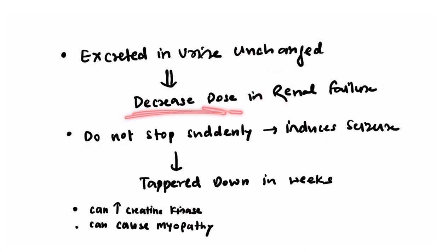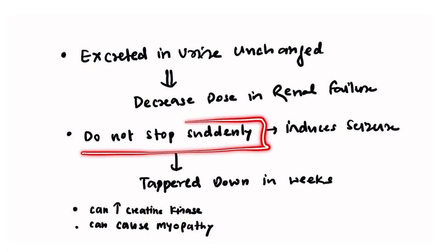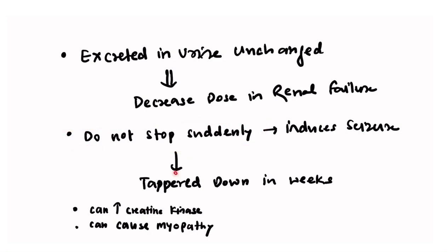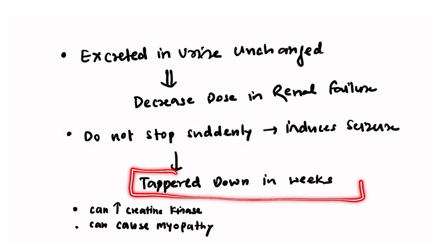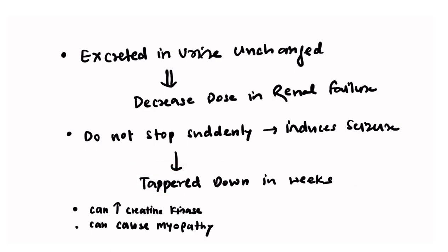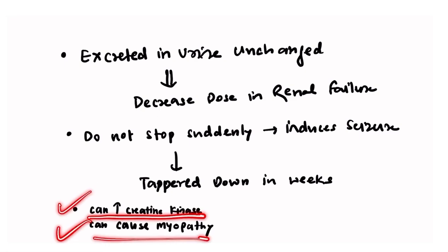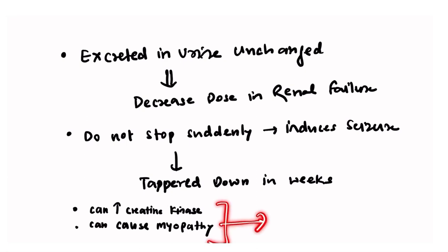Pregabalin should not be discontinued suddenly, as abrupt discontinuation can induce seizures. It must be tapered down over weeks before stopping. Important MCQ points: it can increase creatinine kinase and can cause myopathy. These should all be kept in mind.